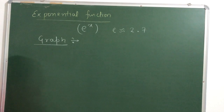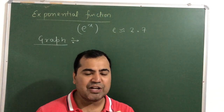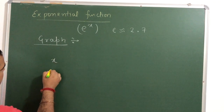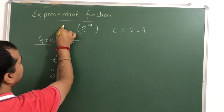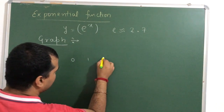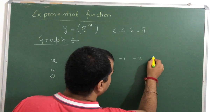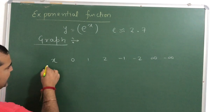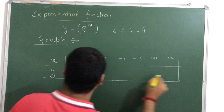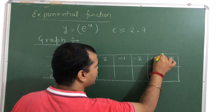Understanding the graph will help a lot with inequalities, because if we know how the graph behaves, we will know which values the exponential can take. For understanding, I am writing y = e raised to x. I am giving x the values: 0, 1, 2, minus 1, minus 2, and infinity or minus infinity. These points are just for reference so that we can understand how the graph will behave.